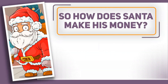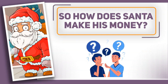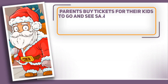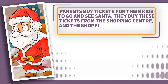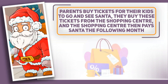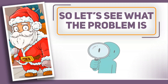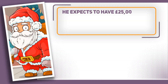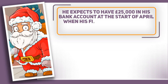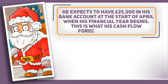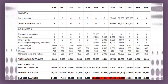So how does Santa make his money? His sales revenue comes from tickets to his grotto. Parents buy the tickets for their kids to go and see Santa, and they buy these tickets from the shopping centre, which then pays Santa the following month. So he gets his sales receipts for October in November and the ones for November in December, etc. With all of this information, Santa pulls together his cash flow forecast for a full financial year. He expects to have £25,000 in his bank account at the start of April when his financial year begins, and this is what his current cash flow looks like. You can see that Santa starts with a £25,000 cash balance at the start of April.